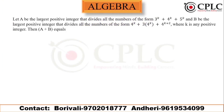All these questions were asked in CAT 2022 exam Slot 1. We have many shortcuts and tricks. Let's start. In this question, let A be the largest positive integer that divides all numbers of the form 3^k + 4^k + 5^k, and B be the largest positive integer that divides all numbers of the form 4^k + 3·4^k + 4^(k+2), where k is any positive integer. Find A + B.